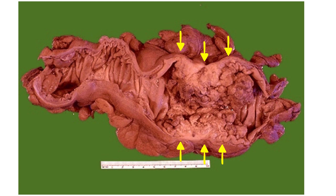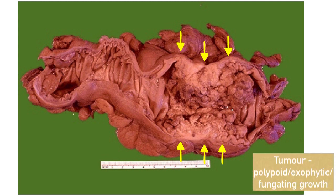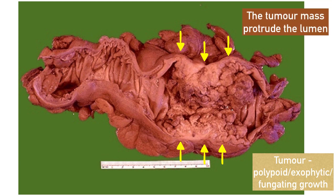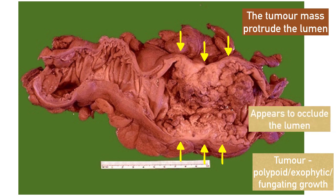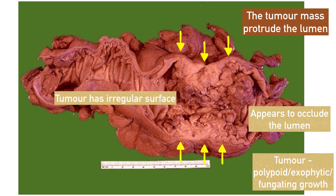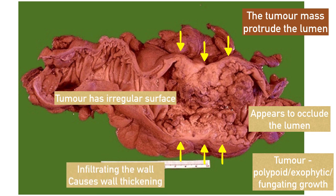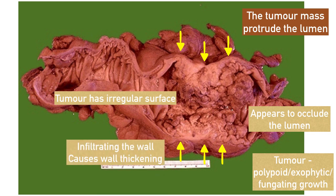The tumor here exhibits a polypoid, exophytic, and fungating growth. The tumor mass protrudes into the lumen and appears to occlude it. The tumor has an irregular surface and is infiltrating the bowel wall, causing wall thickening.